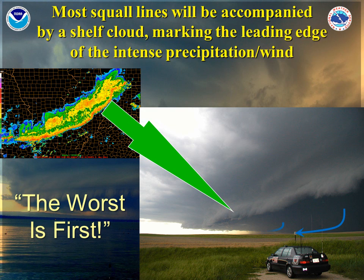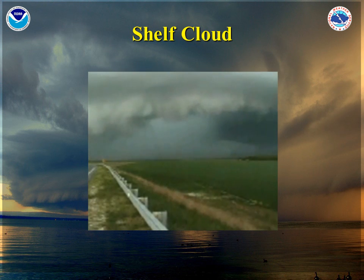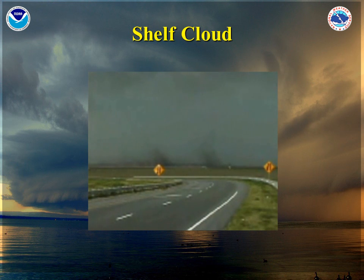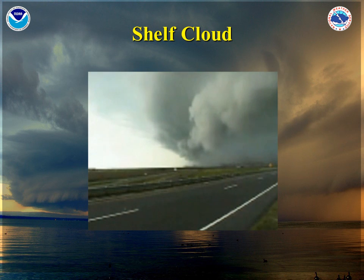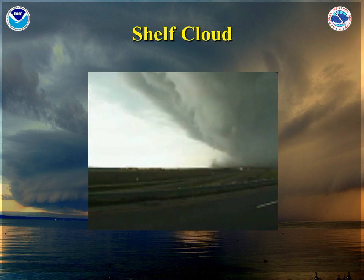Most squall lines will be accompanied by a shelf cloud, which marks the leading edge of intense precipitation and wind. The radar shows how the storms look when we view them on radar, and in the lower right corner you can see what a shelf cloud looks like in the field as the squall line approaches. We like to say the worst is first when it comes to squall lines — the strong winds tend to strike first, and then the rain and hail come afterwards. Here is an animated version of a strong shelf cloud moving over open terrain. Notice the dust kicking up underneath the shelf cloud, indicative of very strong surface winds — possibly 60 to 80 miles per hour or even stronger.